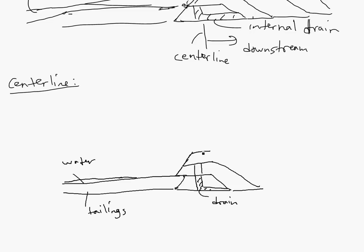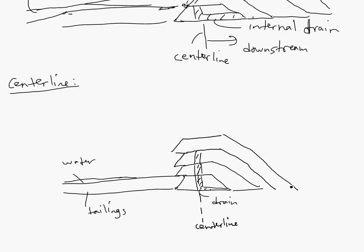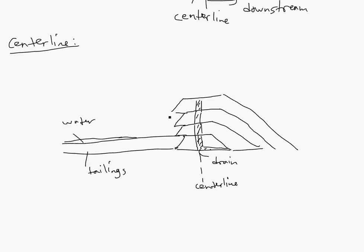You would do another lift like this - so it looks like it's a combination of both. You just go up along the center line, building on top of it. Whenever you need to increase it - this is in years, depending on how much waste is being produced - you'll have beaching and whatnot. So that's basically centerline.